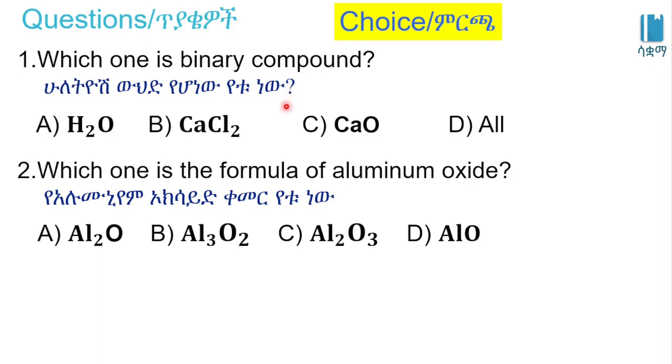Binary compound examples: H2O, CaCl2, CO2. The H2O is water, hydrogen and oxygen. Which one is the formula of aluminum oxide? Aluminum oxide formula: A) Al2O, B) Al3O2, C) Al2O3, D) AlO.